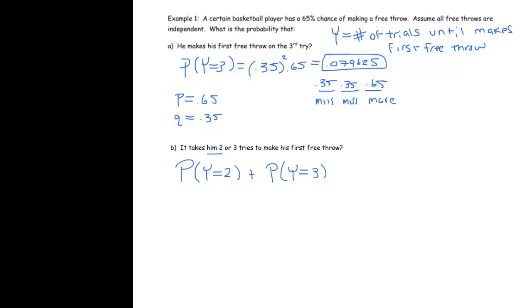The probability it takes 2 would happen if it was a miss and then a make. So that would be .35 times .65. And then we want to add that to the probability it takes him 3.